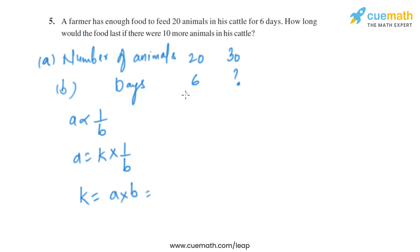On cross multiplication we will get a multiplied by b. Now we know the value of a, that is 20, and we know the value of b, that is 6. So we will get the value of k from here, that is 120.